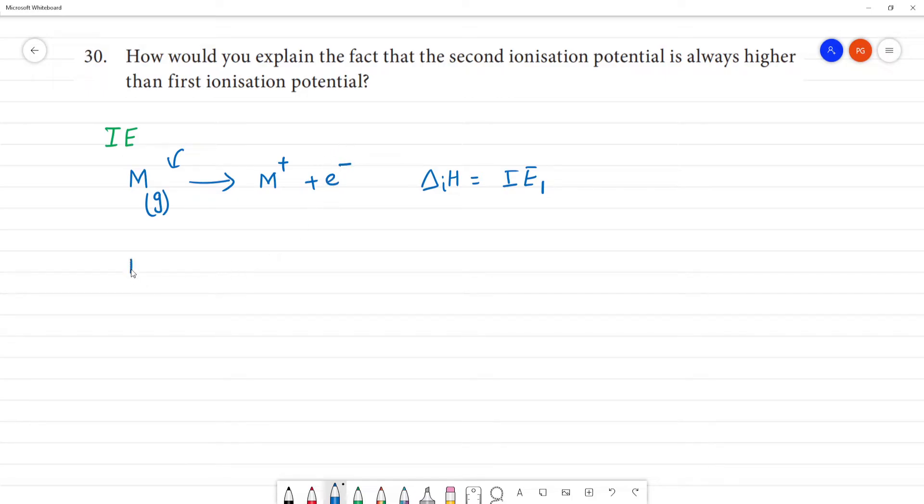Next case: it is a gaseous atom, it is a cation. We supply energy, the second ionization potential, to remove an electron. This ionization energy will be IE₂. So what we have to say is that second ionization potential, that is ionization energy IE₂, is greater than ionization energy IE₁.